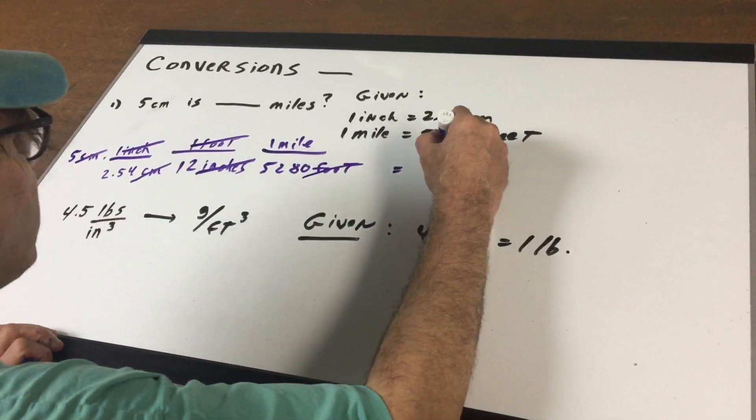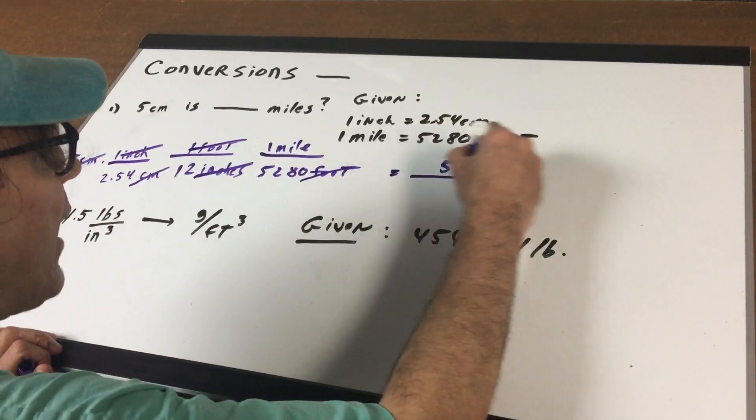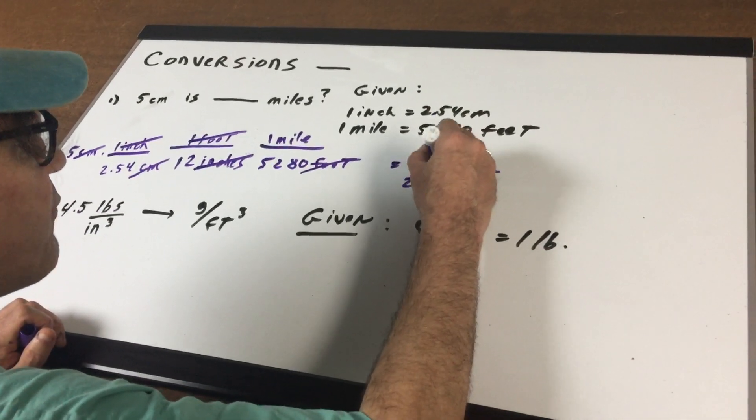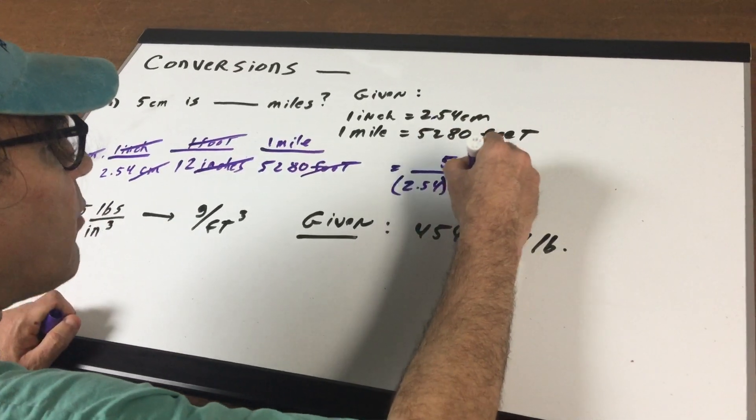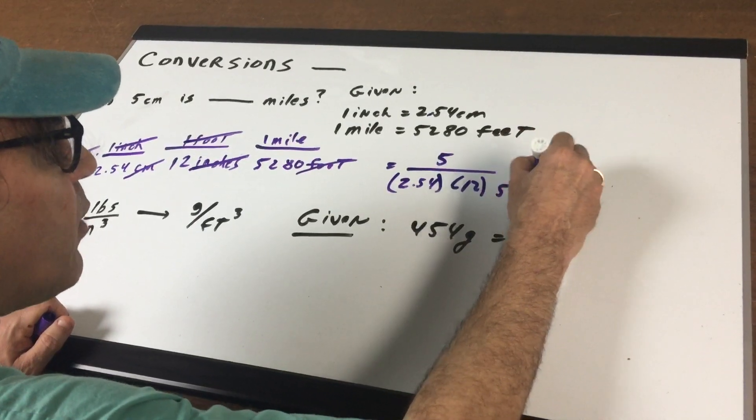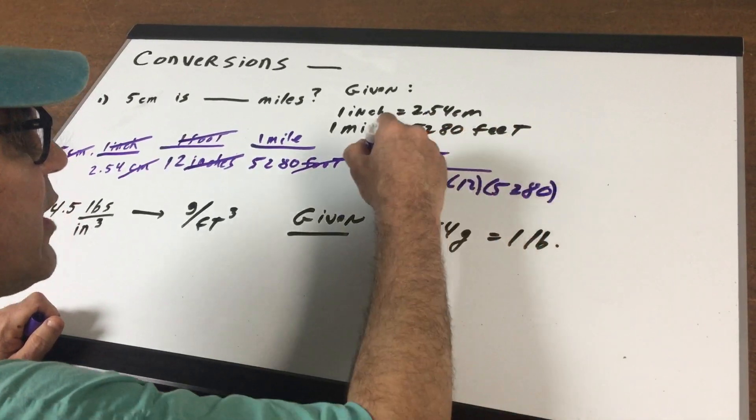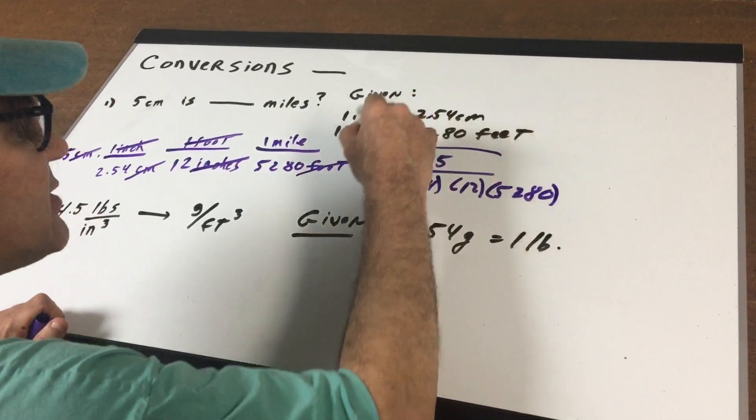So what I'm going to do is the top is going to be a 5. The bottom is a 2.54, a 12, and a 5280. We'll just leave it in this form for the DAT exam.